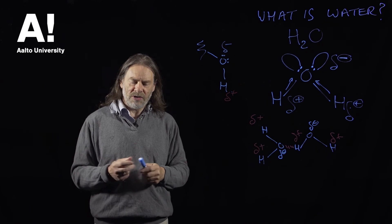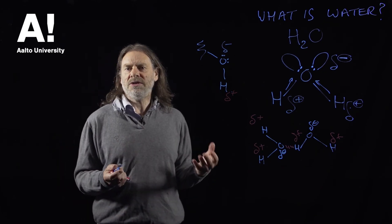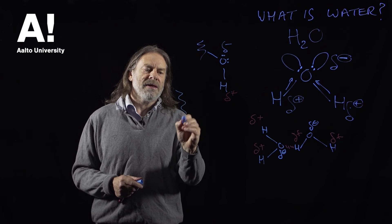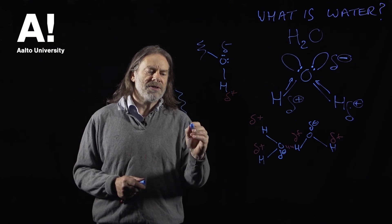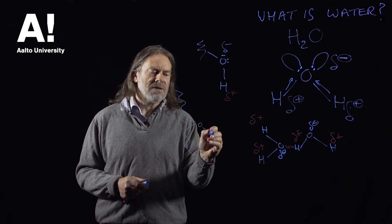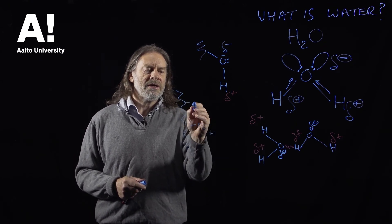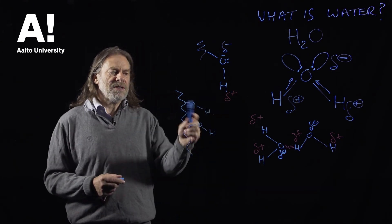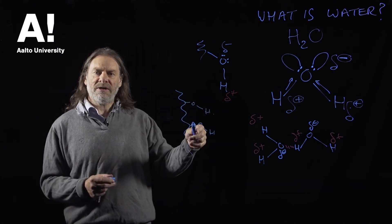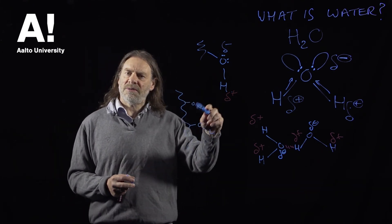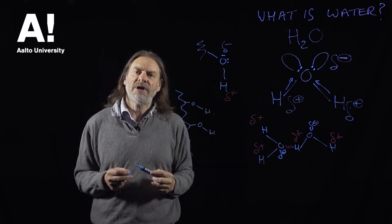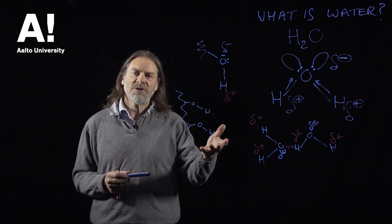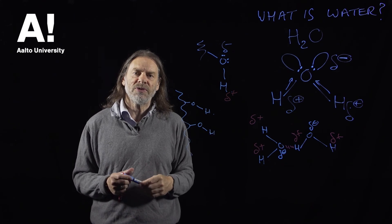So water molecules will interact with anything that has hydroxyl groups on. And if we look at the molecules that you get inside the wood cell wall — the polymers inside the wood cell wall — they are covered in hydroxyl groups. So this hydrogen bonding means that the polymers in the wood can interact with each other, but it also means that the polymers in the wood can interact with water.